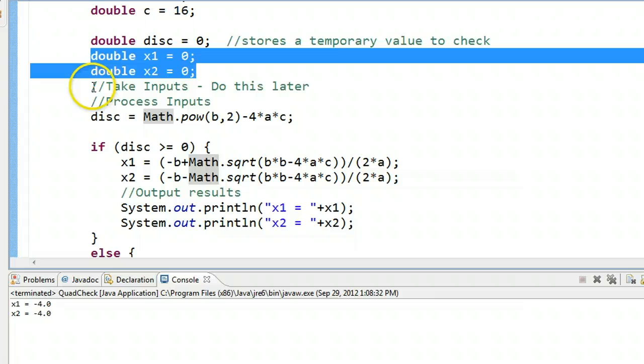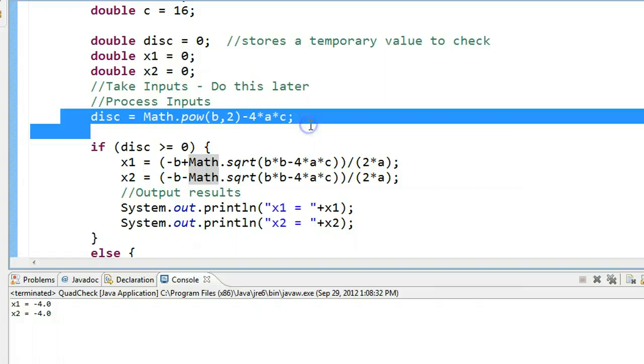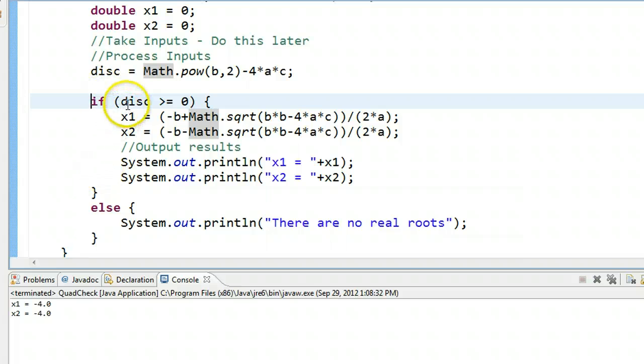I remember I've skipped doing my inputs, we'll do that at the end. And now I'm working through finding the discriminant because I use the discriminant to do a check to see what I need to do. And I say if the discriminant is greater than or equal to 0, I calculate the two roots, and I output them.